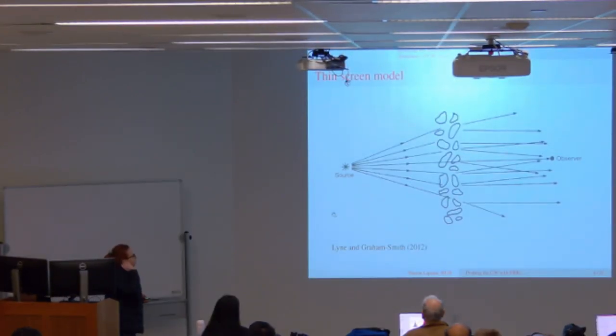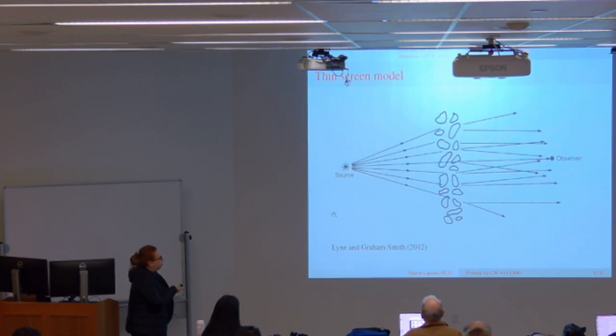So I'll start with the scattering. Say we have some source, this is the FRB, and we're the observer. Now we have this plasma screen, ionized gas - this is the scattering screen we're going to consider. In most calculations, it's considered basically in the middle, which is the ideal place for it to do most of the scattering.